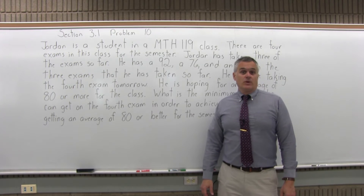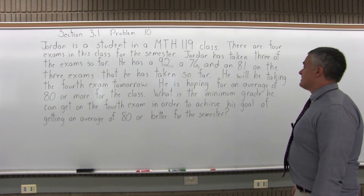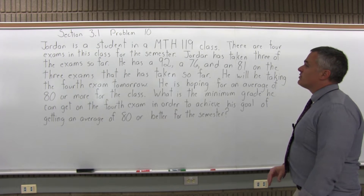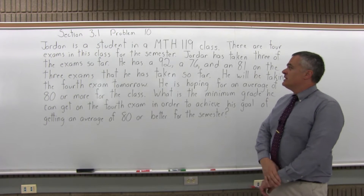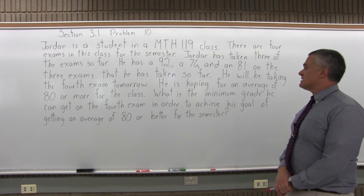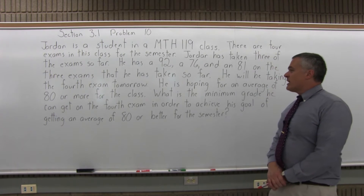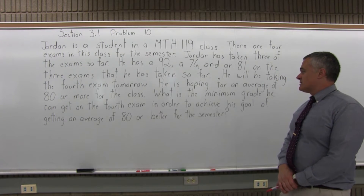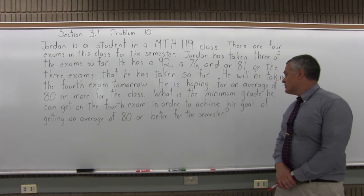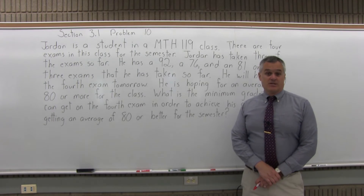This is Section 3.1, Problem 10. Jordan is a student in a Math 119 class. There are four exams in this class for the semester. Jordan has taken three of the exams so far. He has a 92, a 76, and an 81 on the three exams taken so far. He will be taking the fourth exam tomorrow. He's hoping for an average of 80 or more. What is the minimum grade he can get on the fourth exam in order to achieve his goal of getting an average of 80 or better for the semester?